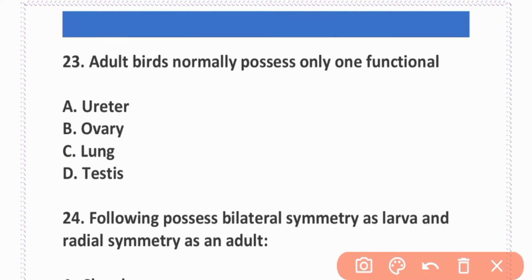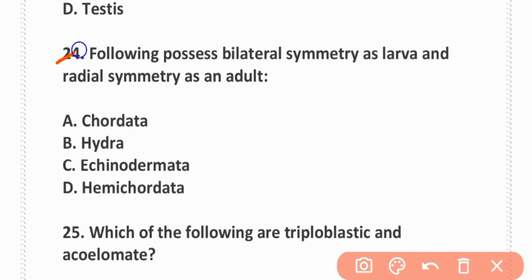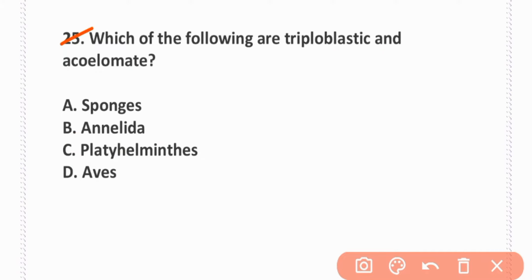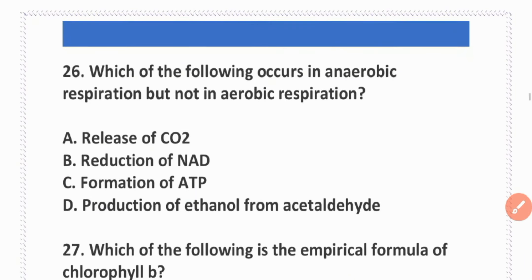The following possesses bilateral symmetry as a larva and radial symmetry as an adult: Echinodermata. C is correct. Which of the following are triploblastic and acoelomate is Platyhelminthes. Option C is correct.